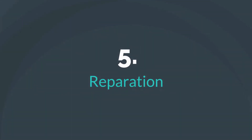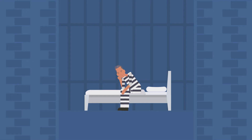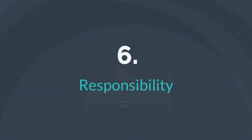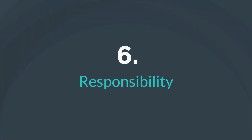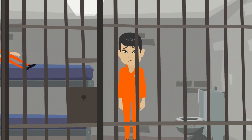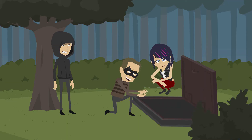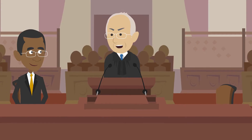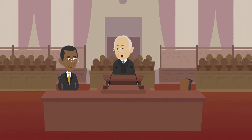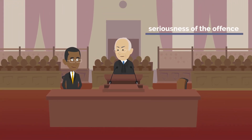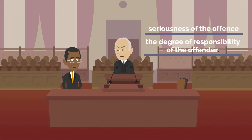Fifth is reparation — the principle that the punishment should repay, repair, or compensate the victim or community affected by the crime. Finally, sixth is responsibility — the principle that the punishment should compel the offender to acknowledge the harm they have caused to the victim and to the community. Overall, the court must impose a sentence that is proportional to the seriousness of the offense and the degree of responsibility of the offender.